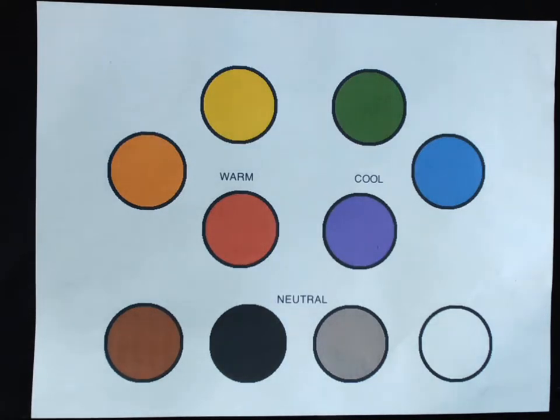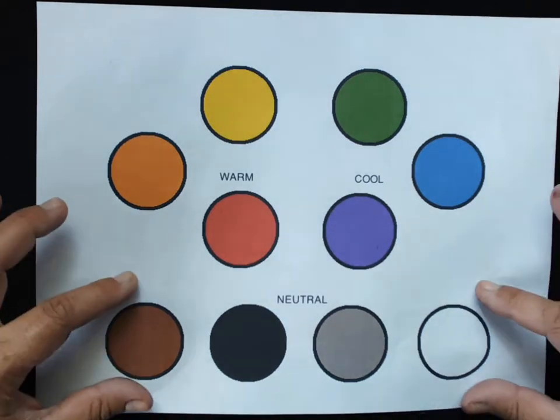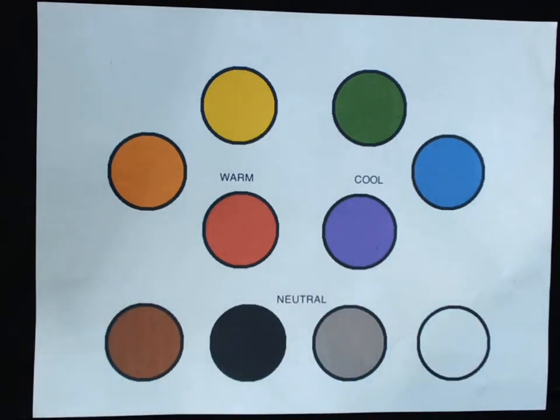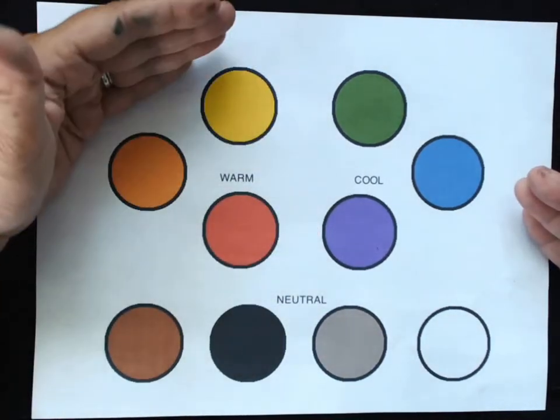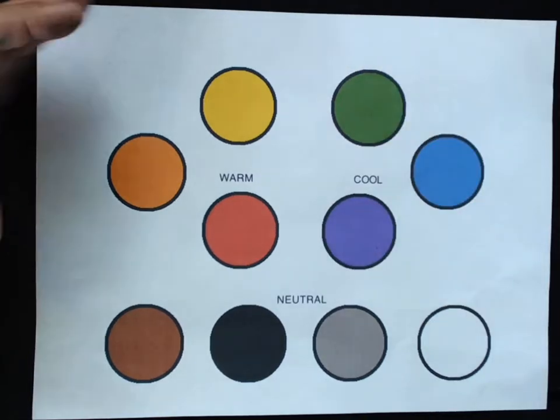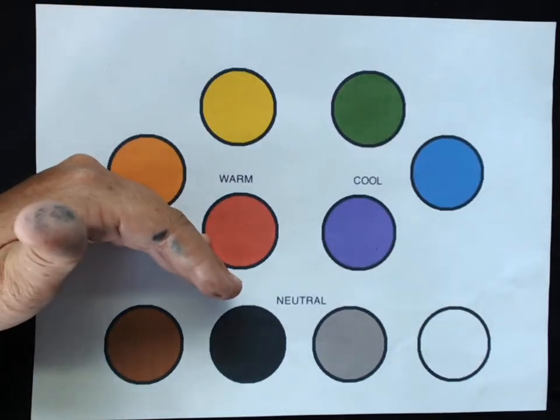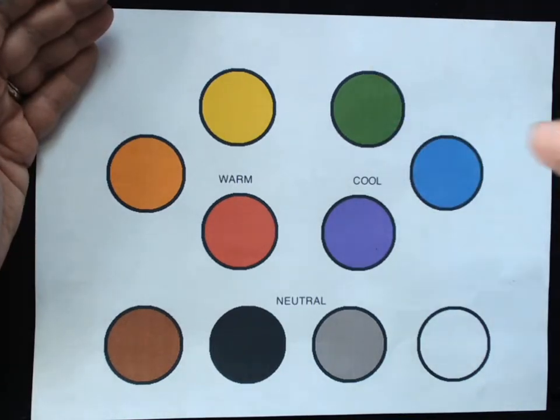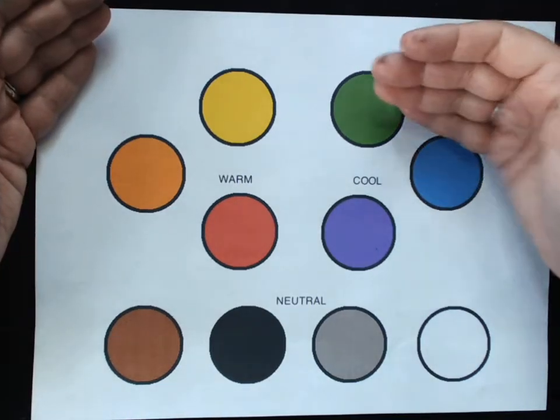All right guys, so today we're going to be talking about a color family called the neutral color family. This is different than what we have been talking about, which is warm colors or cool colors. Remember warm colors are a little bit like sun or like fire, and cool colors are like the mountains or water or the forest.